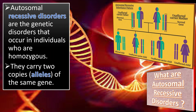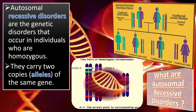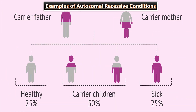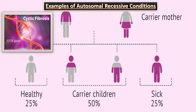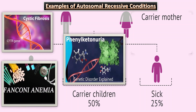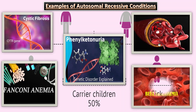Being homozygous means carrying two copies, or alleles, of the same gene. Common examples of autosomal recessive conditions include cystic fibrosis, Fanconi anemia, phenylketonuria, sickle cell disease, and thalassemia — which is the most common autosomal recessive condition worldwide. There are high chances of getting all these conditions in consanguineous marriages.